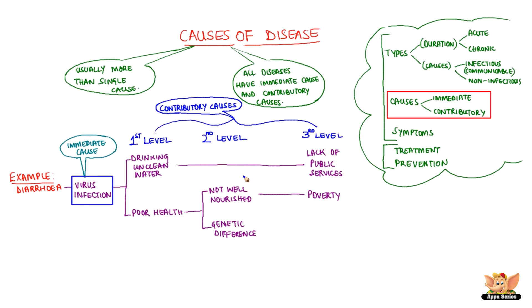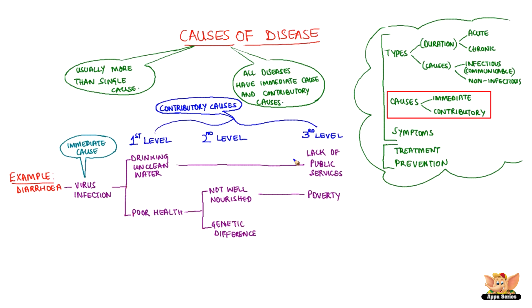Second cause: virus infection due to poor health, due to malnourishment, due to poverty. And third cause: virus infection due to poor health, due to genetic difference. Thus, we can find the cause of a disease.